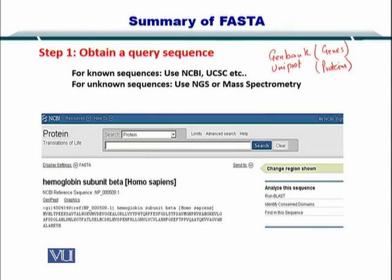To start, once you want to employ the Fast Alignment Algorithm, the first step is to obtain the sequence or the IDs for the proteins or the genes. If you know the sequences, you can simply go to NCBI, UniProt, or SwissProt and obtain the protein sequence. In the case of genes with known sequences, you can go to GenBank and obtain the sequence.